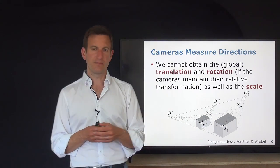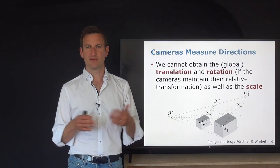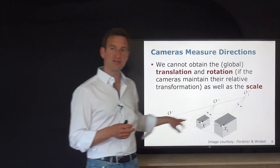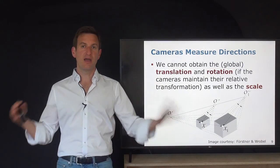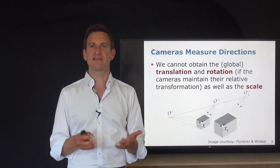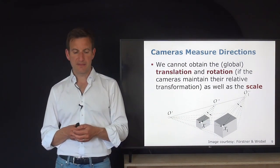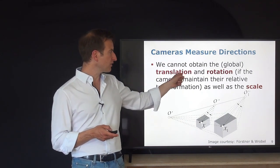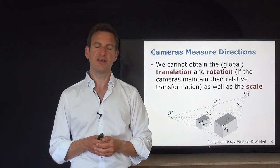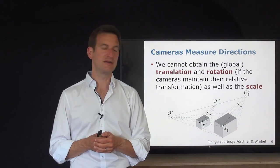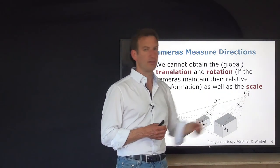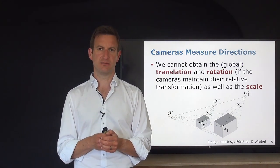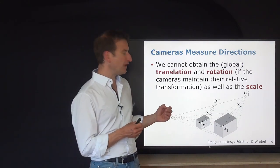We cannot estimate the global scale — how far the second camera is from the first. We also don't know where camera one is in a global reference frame, so global translation and rotation are lost. From 12 parameters for the calibrated camera, seven cannot be estimated: three translation, three rotation (global pose), and one scale parameter. That leaves five parameters we can actually estimate.